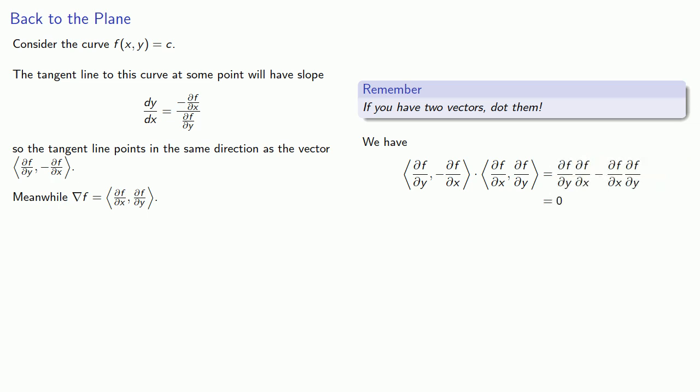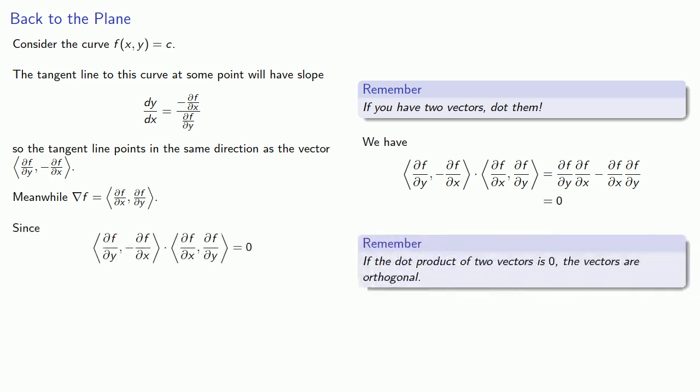Which is zero. And remember, if the dot product of two vectors is zero, then the vectors are orthogonal. And this means that the gradient of f is orthogonal to the tangent line. We say that the gradient of f is a vector normal to the curve.